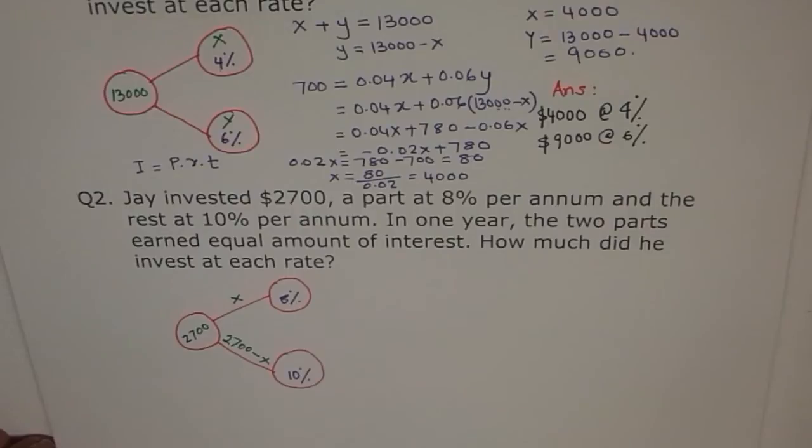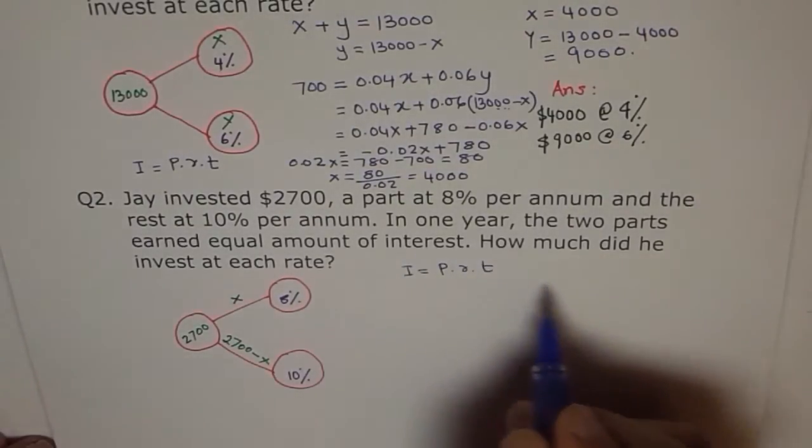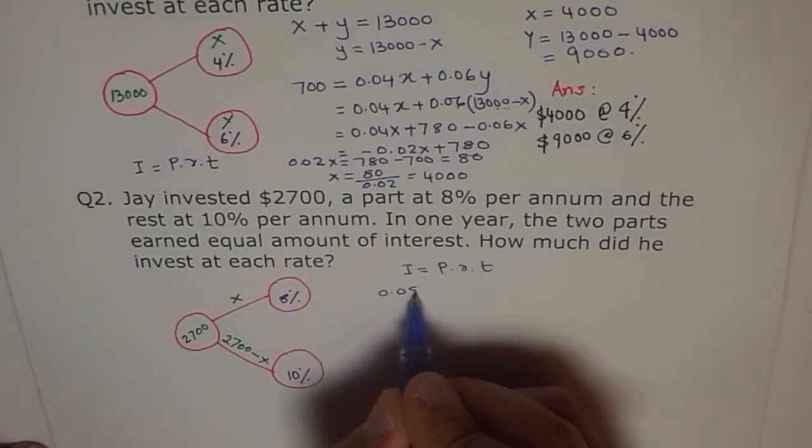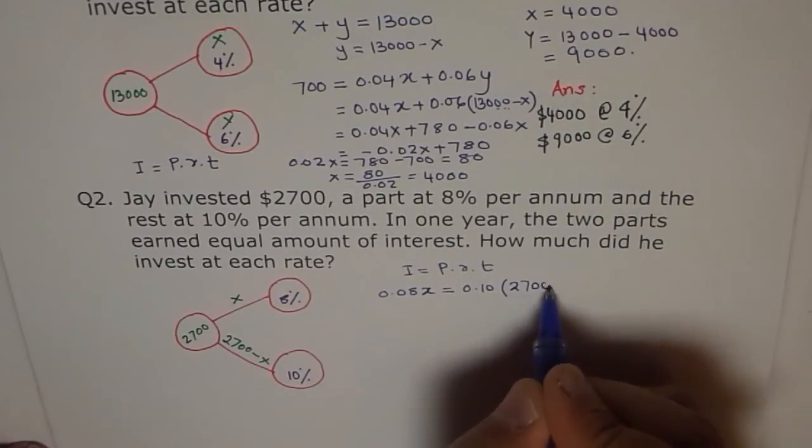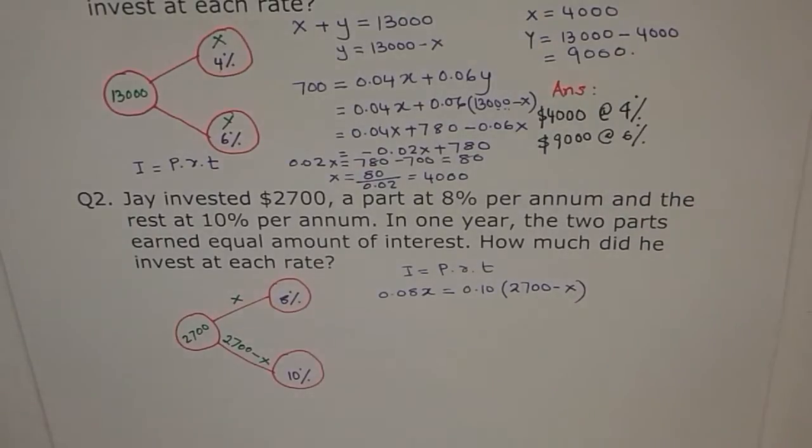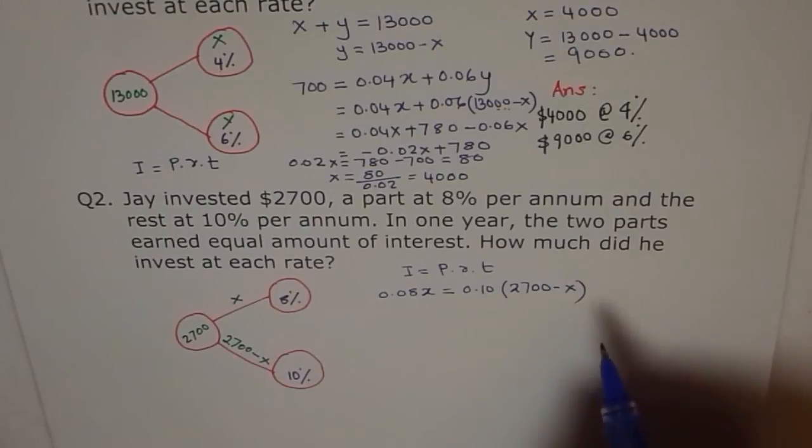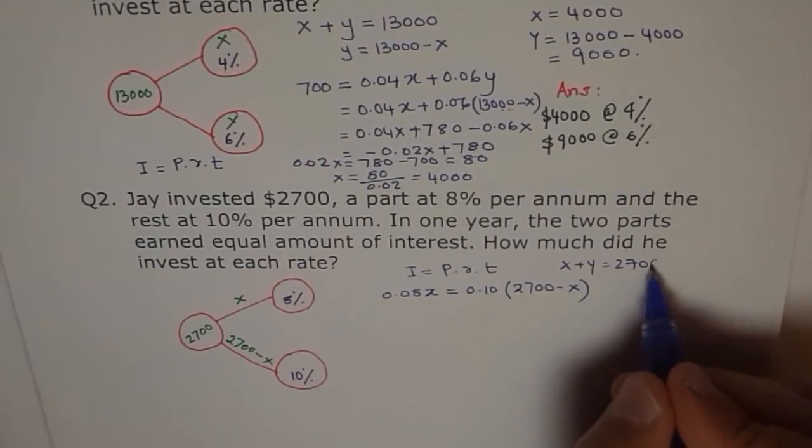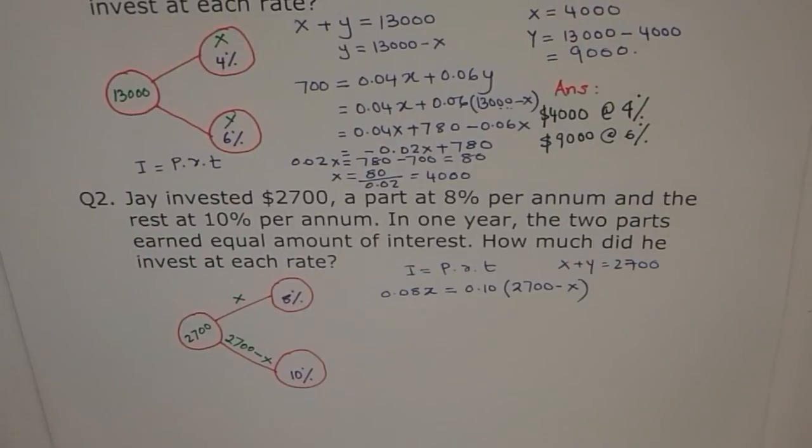Now, we say interest earned is same. That means what should be our equation? What is the interest earned? P. So, interest earned is P times R times T. And it is same. Same means X percent of 8. So, we'll write 0.08 of X is equal to 0.10 of 2700 minus X. So, that is our second equation. What was the first equation? Well, the first equation was X plus Y is 2700. First equation was X plus Y equals to 2700. And therefore, Y is 2700 minus X, which we wrote here straight. You could write straight. Like I wrote. Perfect. It saves time.